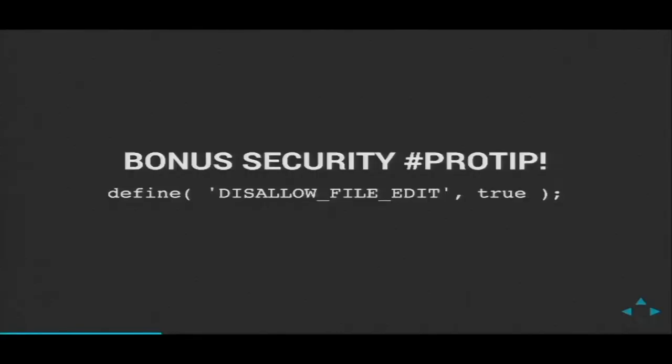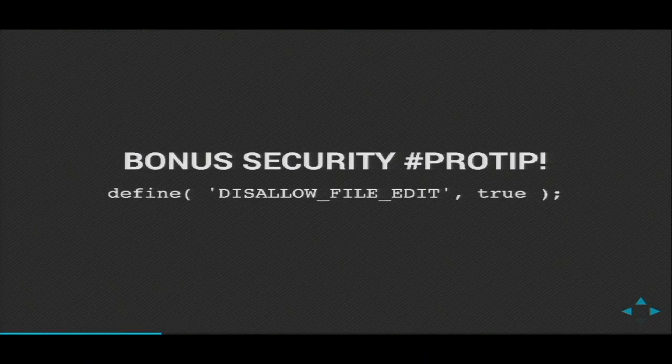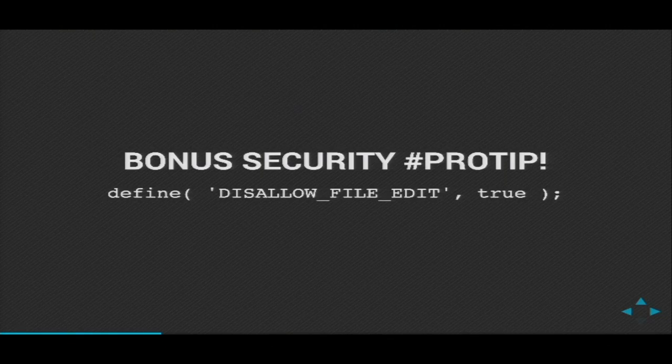I'm going to take a little pause and give you a security tip. By default, WordPress lets administrators edit the PHP files for your themes and plugins directly through the WordPress admin. If you're using Git to manage your deployments, that opens up administrators — who might be your clients — to edit code outside the revision control system. We've actually had clients do this and then email us complaining that when we pushed out a new revision, their changes went away.